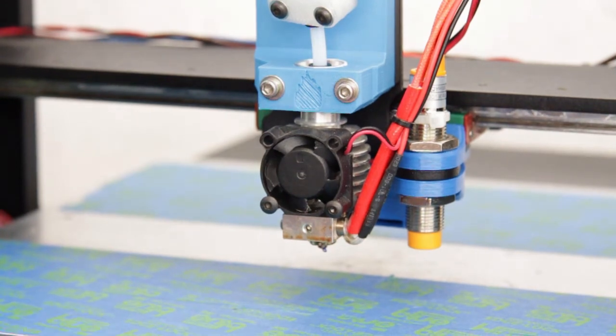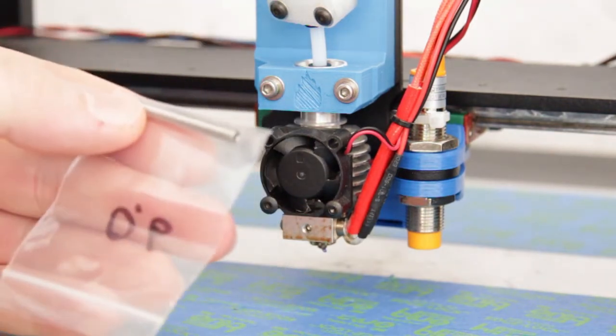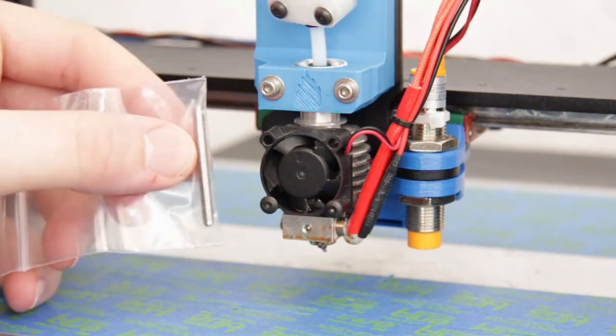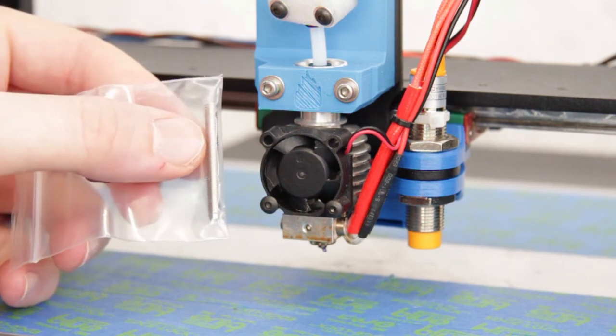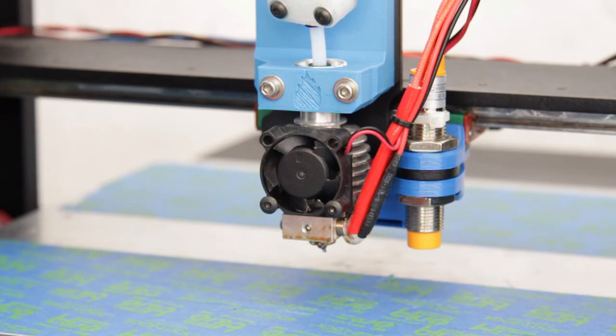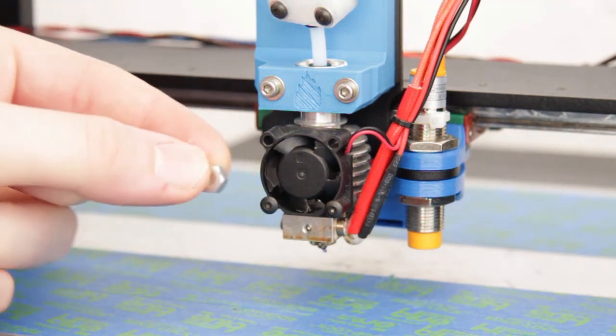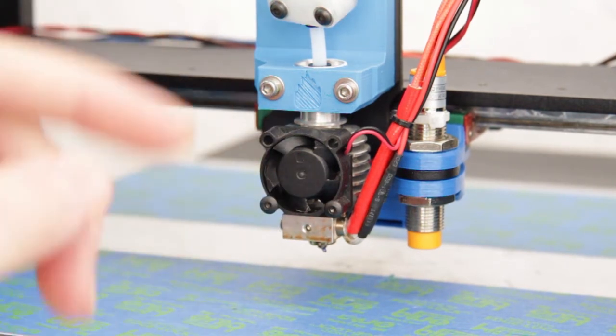Basically it uses these one piece nozzles. This is a .6 and the one that's on there is a .4. The nozzle is the secret to the way the Prometheus system works. It also uses these aluminium nuts to customise the heat zone.